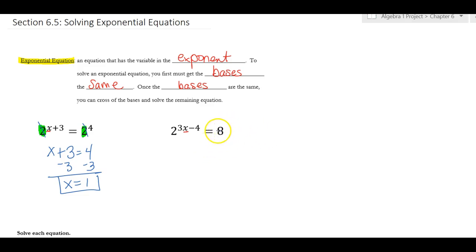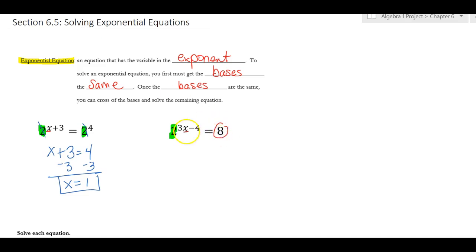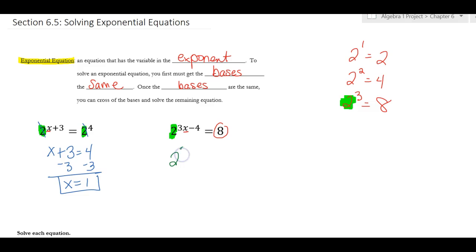Here's an example where I have a base of 2 and then I have this 8 over here. What I have to do is write 2 in terms to get an 8. Here are the exponents: 2 to the 1 is 2, 2 squared is 4, 2 to the third is 8, so that's the one I'm going to use. Now I'm going to keep the left the same, 2 to the power of 3x - 4, and instead of 8 I'm going to write 2 to the third. Now my bases are the same, so I can cross them off.